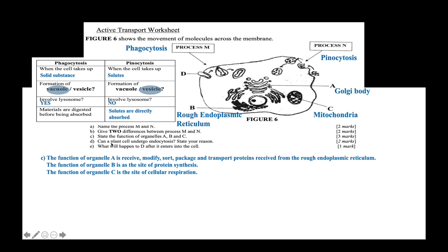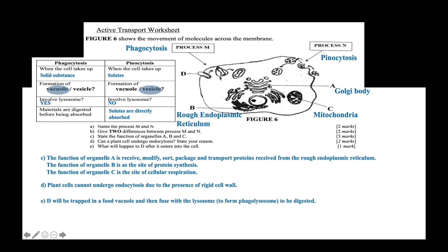For question D: can a plant cell undergo endocytosis? State your reason. Plant cells cannot undergo endocytosis. This is due to the presence of a rigid cell wall. For question E: what will happen to the substance after it enters into the cell? In phagocytosis, the solid material will be trapped inside a food vacuole, and then fused with a lysosome to be digested and then absorbed. The phagolysosome refers to the food vacuole, or phagosome, that has fused with the lysosome.